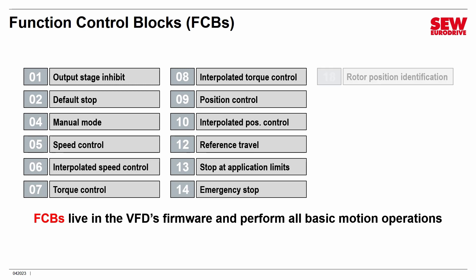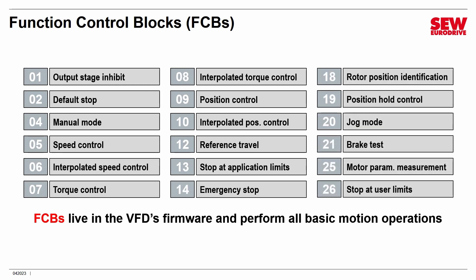The master list isn't actually too large — there are only 18 FCBs at this time. They each have a number, and you'll notice some missing numbers in the list. It goes from 1 to 26, but there are only 18 total, which maybe suggests there will be others at some point. These FCBs live in the VFD's firmware and perform all the basic motion operations. For example, FCB 05 is used for basic speed control, 07 does basic torque control, 20 does jogging, 01 does output stage inhibiting, 02 does default stops, and 04 does manual mode. Each one does a specific basic task that is important in what a VFD does.